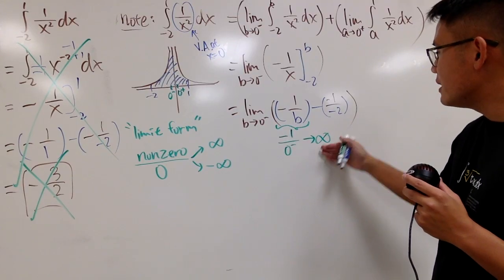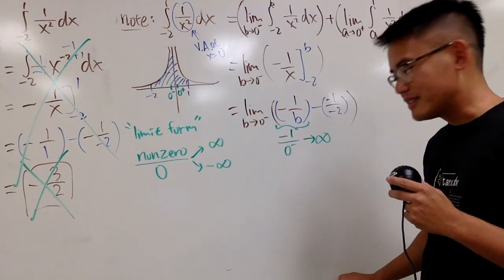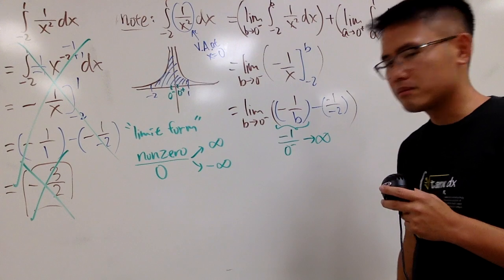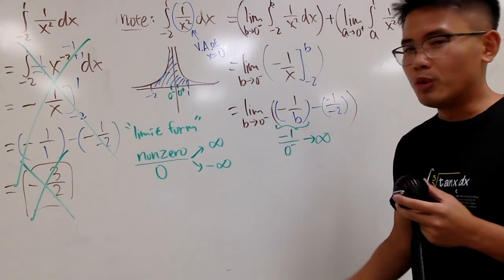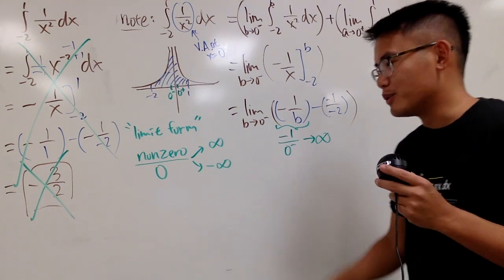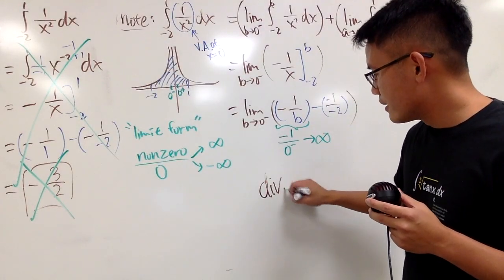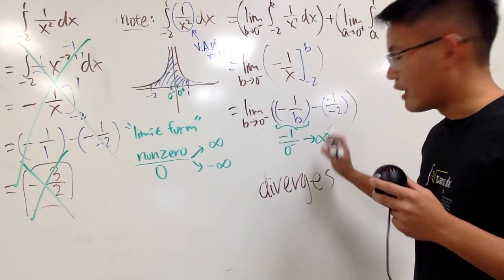Of course, infinity minus 1 half. It's just the same. If you take away 50 cents from Jeff Bezos. Jeff Bezos. Doesn't matter. If you take away 1 million from him, it's like, oh, he's still rich. Right? So, here's the conclusion. This right here diverges.